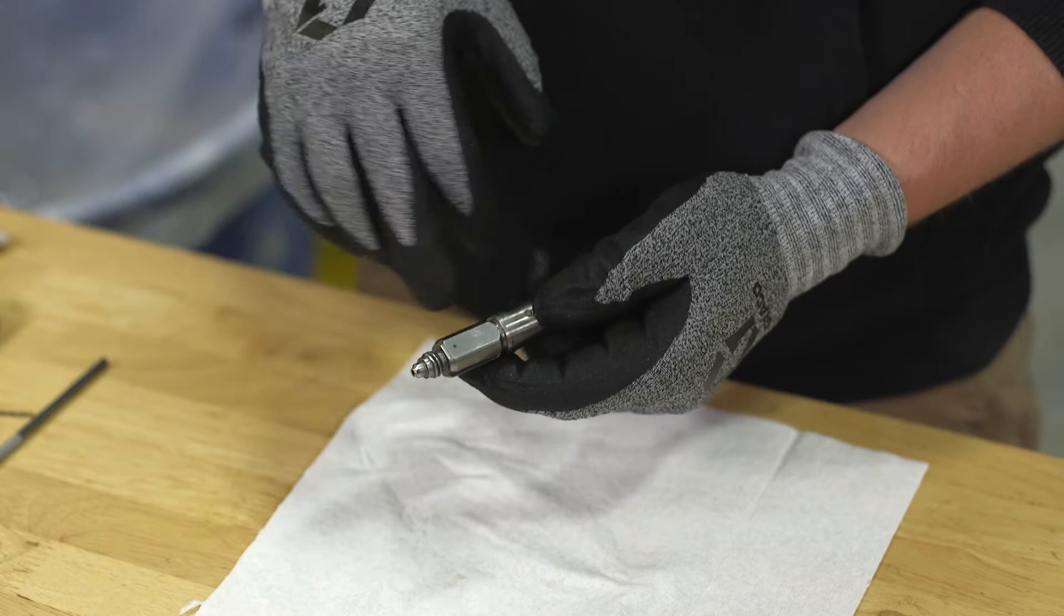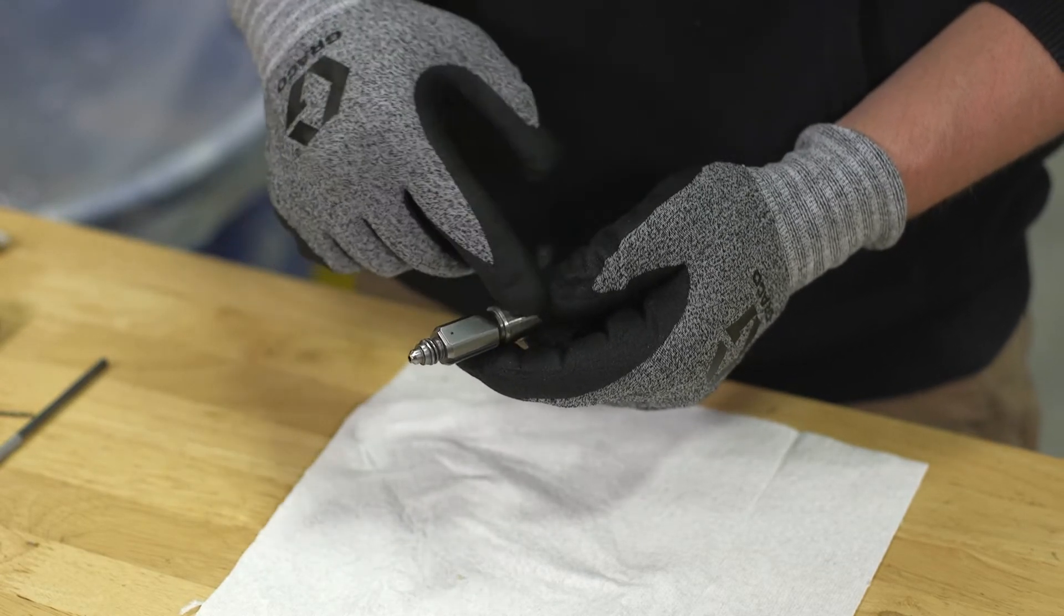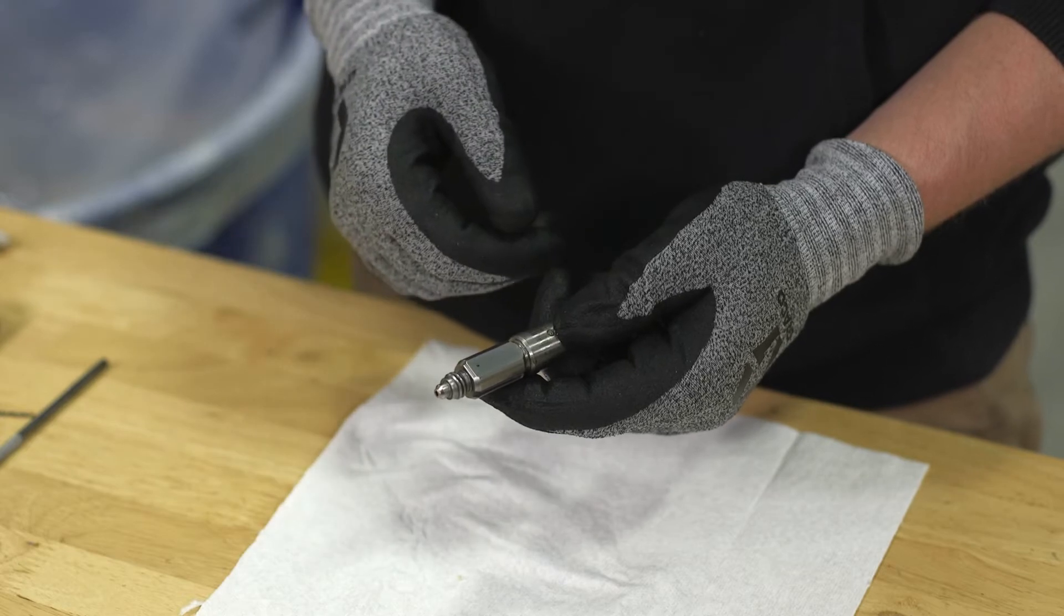The number one thing you want to watch for is scratching on the side of the chamber. This is the surface that your side seal rubs on.